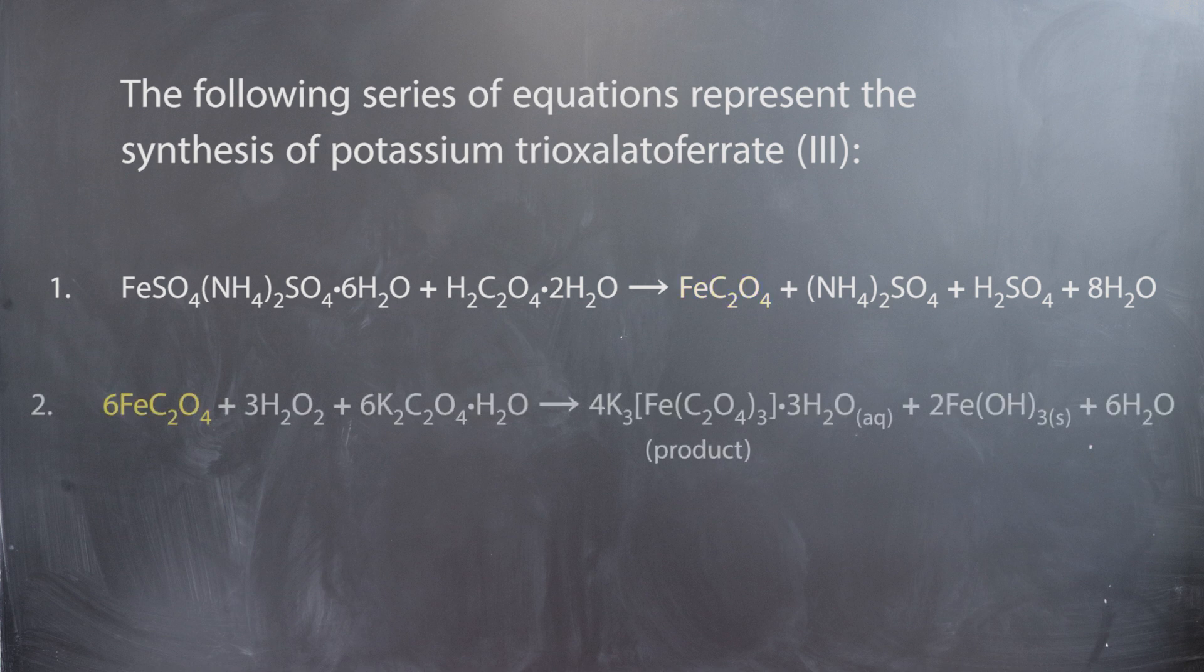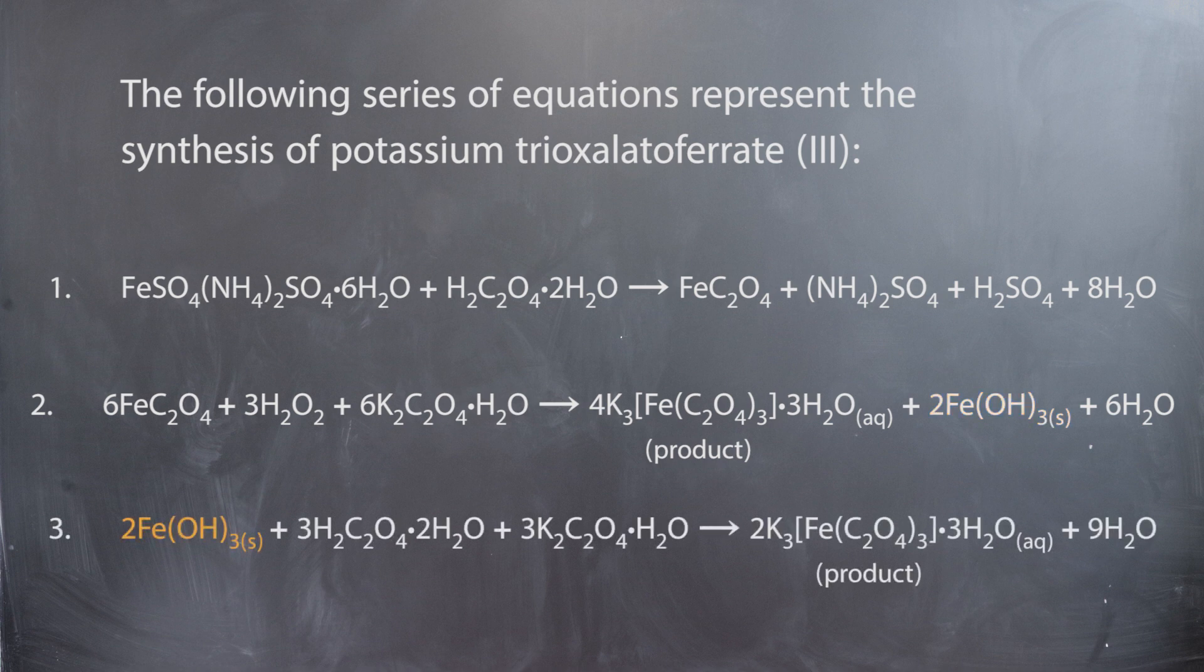The ferrous oxalate is then washed and reacted with hydrogen peroxide and potassium oxalate to form the product potassium triaxalato ferrate. A side product formed in this reaction is ferric hydroxide, however it reacts with excess oxalic acid and potassium oxalate to form the final product as well.